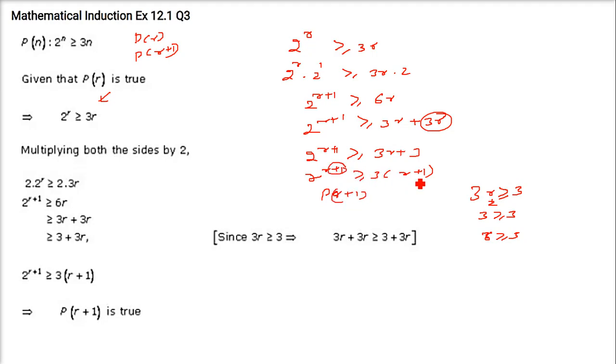3 take common, r plus 1. And what is this? This is nothing but P(r+1). So if P(r) is true, P(r+1) is also true.